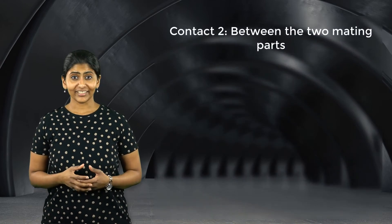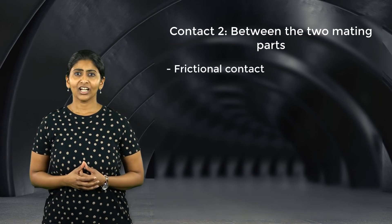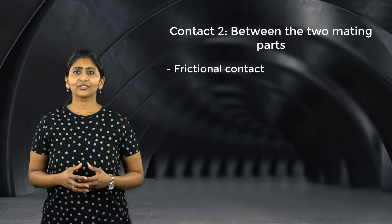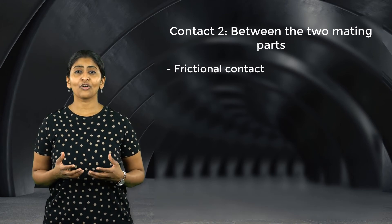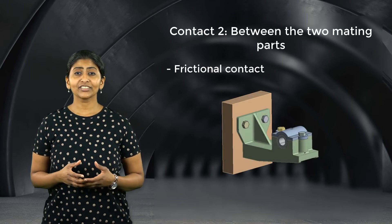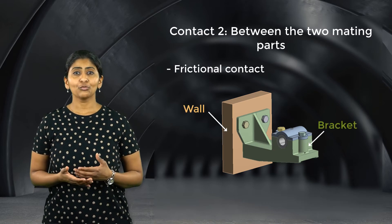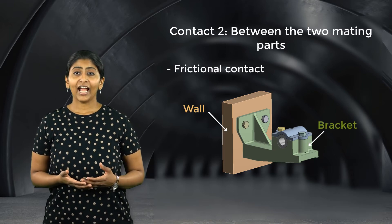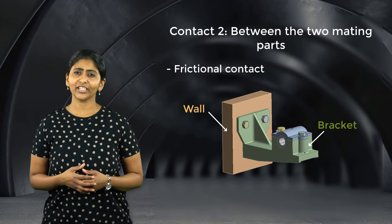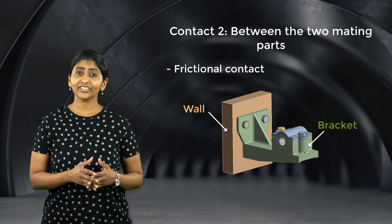Let's move on to the second contact region, which is between the two mating components. Generally, frictional contact is used between the two mating components. Using bonded contact between the mating components makes the use of bolts redundant. For example, if bonded contact is used between the wall and the bracket, there will be no relative motion between the two and stresses developed in the bolts will not be accurate. This may lead to incorrect judgement and inefficient design.